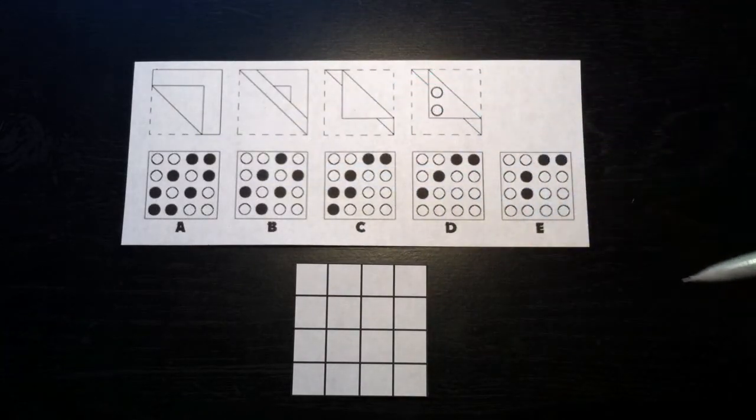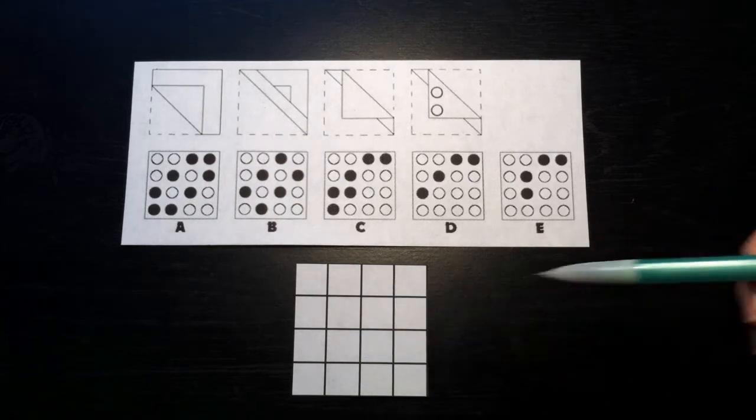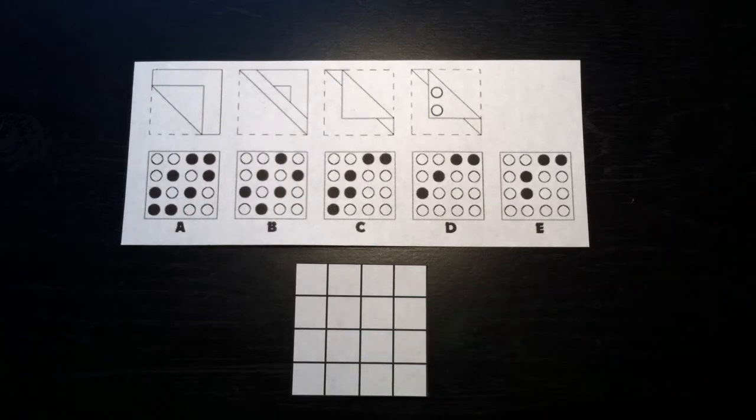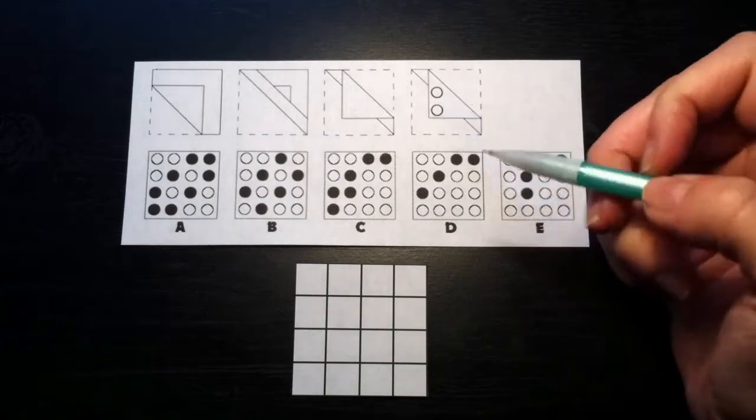All hole punching answers will be in 4x4 grids with various dark circles, so we will use a grid to determine the correct answer. Let's start with the first two holes.